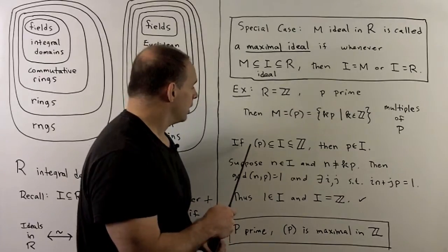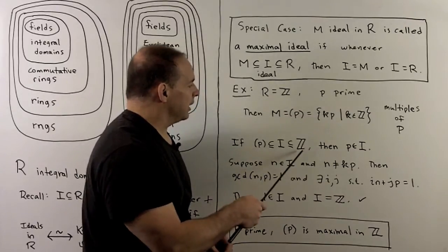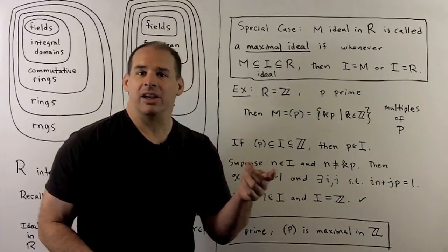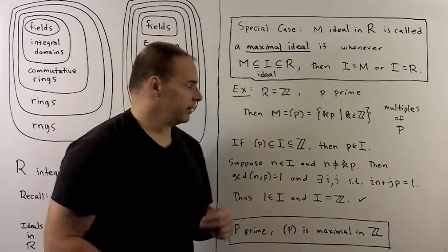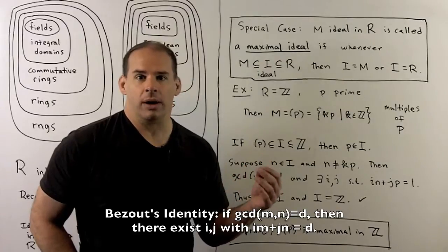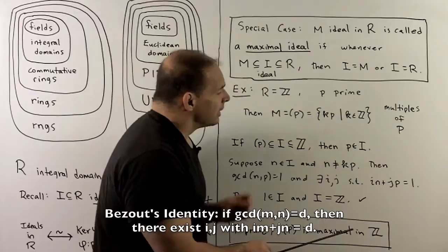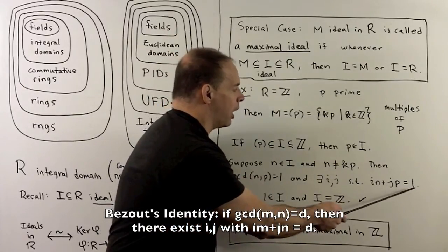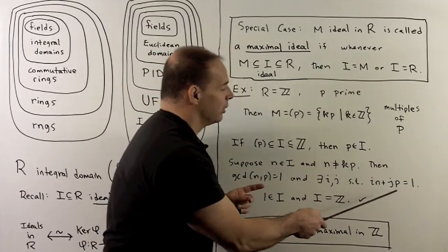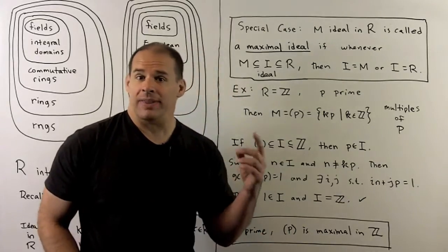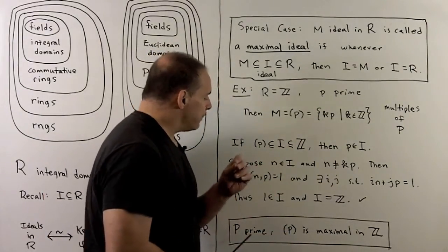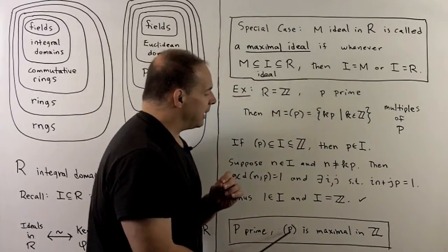Let's verify that. If we try to fit an ideal between (P) and ℤ, we definitely have P in the ideal. Suppose there's another element N in the ideal that's not a multiple of P. Since P is prime, the GCD of N and P is 1. By Bezout's identity, we can find integers I and J such that I·N + J·P = 1. Since N and P are in the ideal, multiplying by any integer keeps us in the ideal, and adding stays in the ideal, so 1 is in the ideal. That means the ideal must equal all of ℤ. So the ideal generated by a prime P is a maximal ideal.